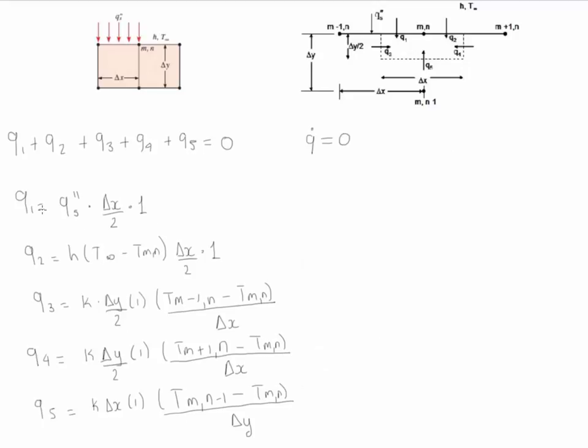If we take the five different Q's and we substitute it into this balance equation and we assume that the value of delta X and delta Y are equal to each other we will get this equation.